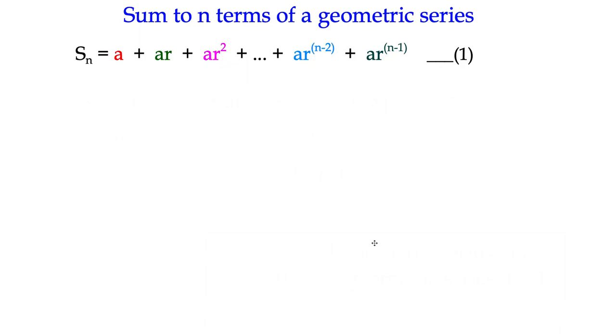Okay, this is example 9 in our sequences and series topic. We're going to have a look at the sum to n terms of a geometric series. We've been looking at the nth term rule for a geometric series, so now we're going to look at the sum to n terms. I've got the equation written out here, which I've called equation 1.